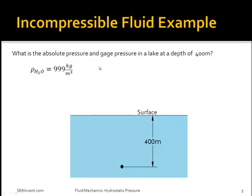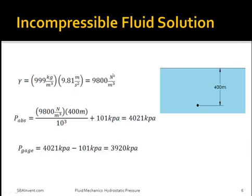Here is an example of how to solve a problem dealing with an incompressible fluid. What is the absolute pressure and gauge pressure in a lake at a depth of 400 meters? The density of water equals 999 kilograms per meter cubed. First, solve for the specific weight: 999 kilograms per meter cubed times the gravitational constant of 9.81 meters per second squared, which equals 9800 newtons per meter cubed.